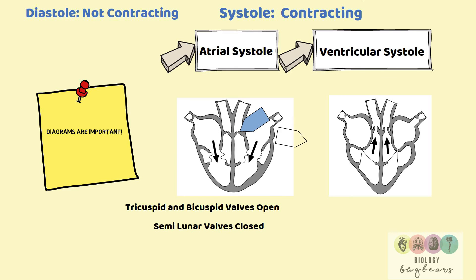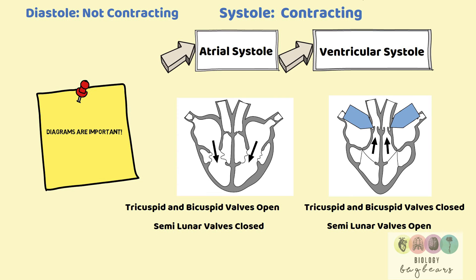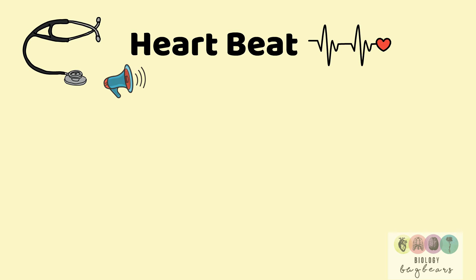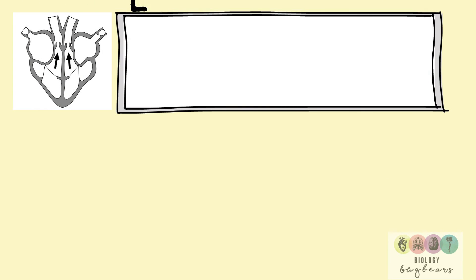In ventricular systole, when the ventricles are contracting but not the atria, the tricuspid and bicuspid valves are now closed but the semilunar valves are open — look at the arrows in the diagrams also. If you can understand those diagrams of the cardiac cycle, you'll be able to understand the heartbeat sound. The heartbeat has a particular sound — lub-dub, lub-dub — and each part of that sound is created by valves closing.